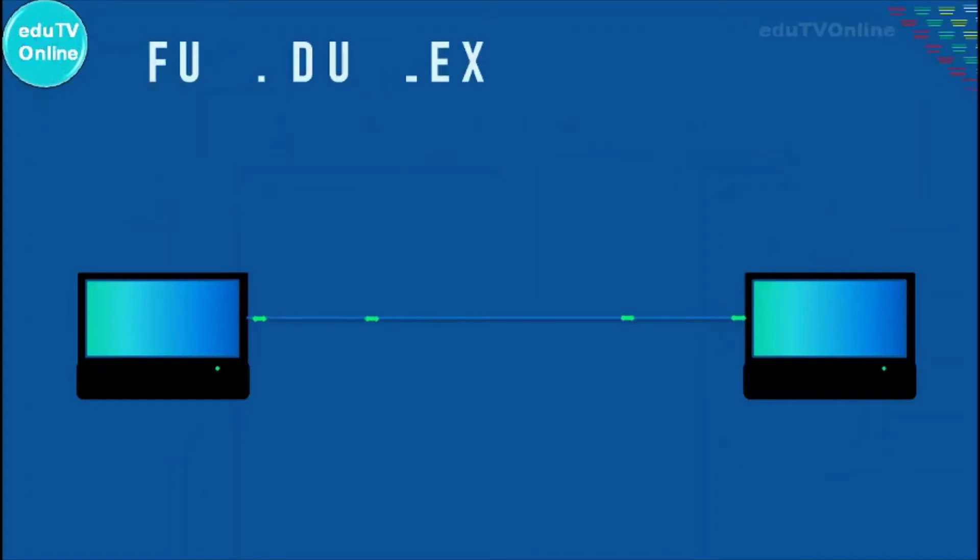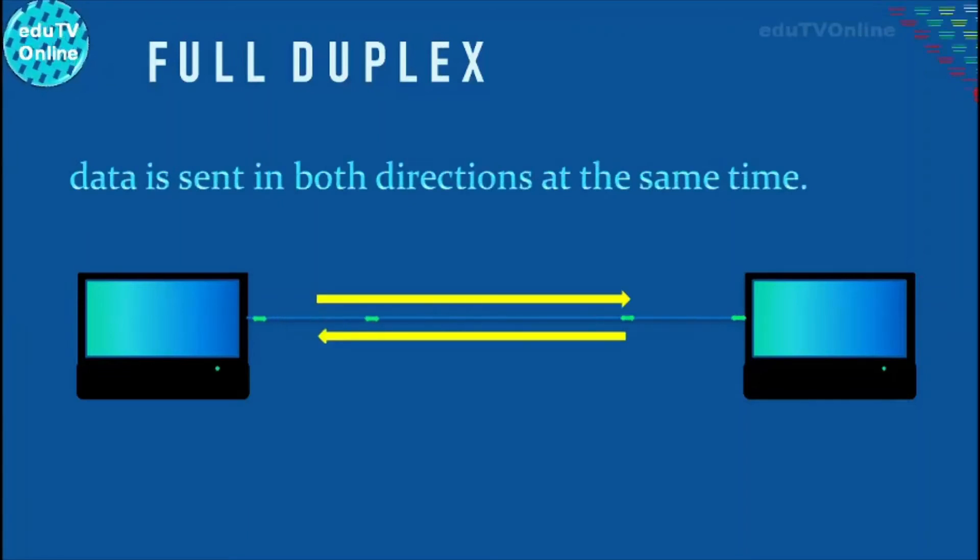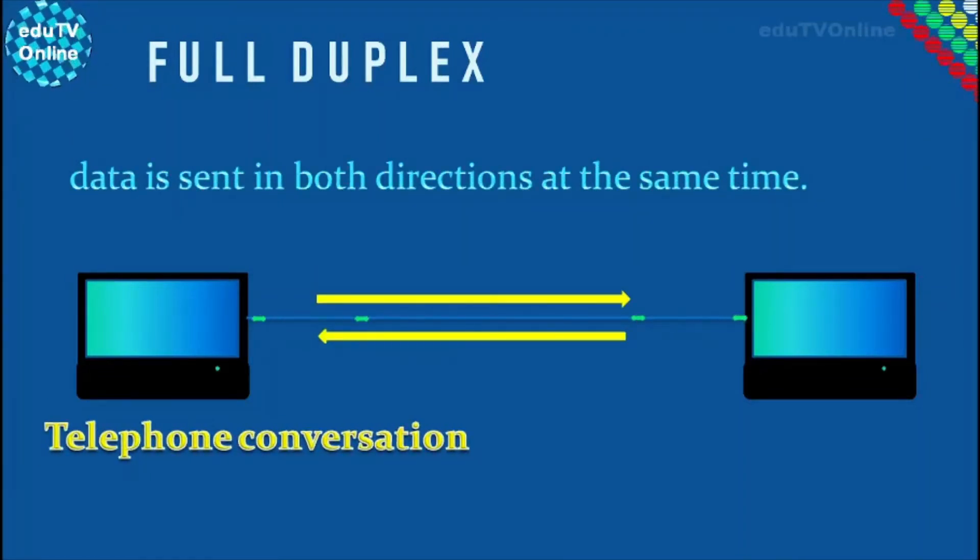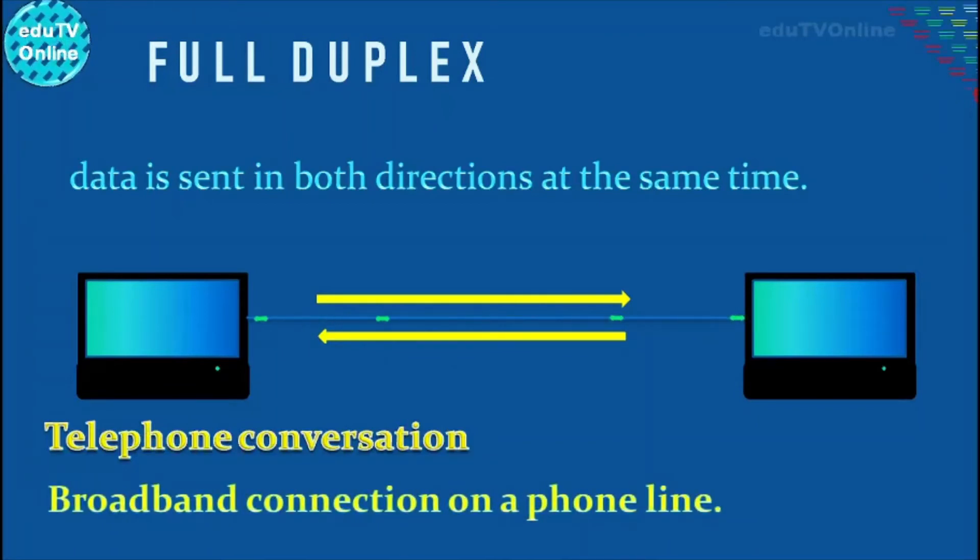In full duplex transmissions, data is sent in both directions at the same time. An example is a telephone conversation where both people can speak to each other at the same time. Another example is broadband connection on a phone line.